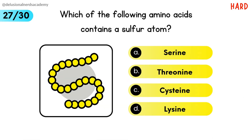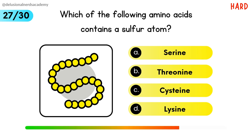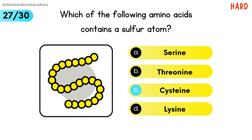Which of the following amino acids contains a sulfur atom? Cysteine contains a sulfur atom.